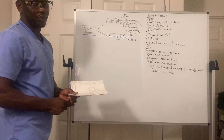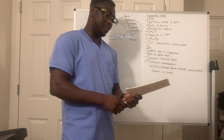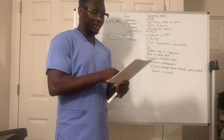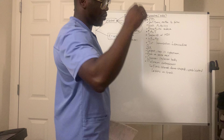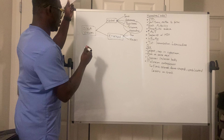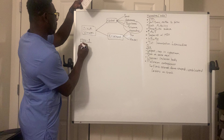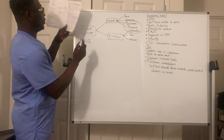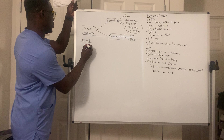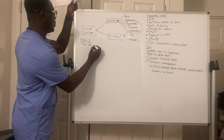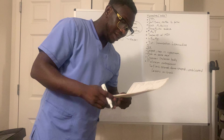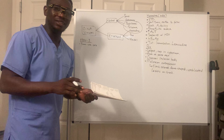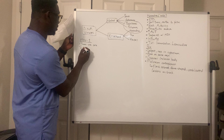Now let's tackle Herpesvirus — we have almost eight viruses under it. Starting with Herpes Simplex Virus 1 (HSV-1): it is transmitted through sex and saliva, and it is one of those TORCH infections affecting children. The most important high-yield point: HSV-1 is latent in the trigeminal ganglia.